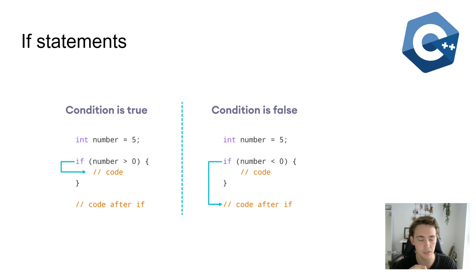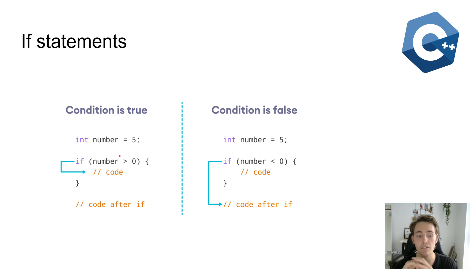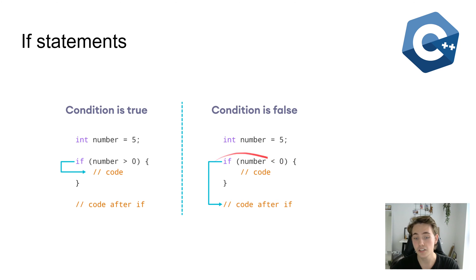First of all, what are the basics of an if statement? When we have an if statement we give it some condition. We can see over here to the left that if the condition is true — for example, we have an integer number declared as the value 5 — then in the if statement we have a condition set inside the parentheses, and we check if that number is bigger than zero. If the condition is true, it will execute the code inside the curly brackets; if it was false, it will skip over those lines of code.